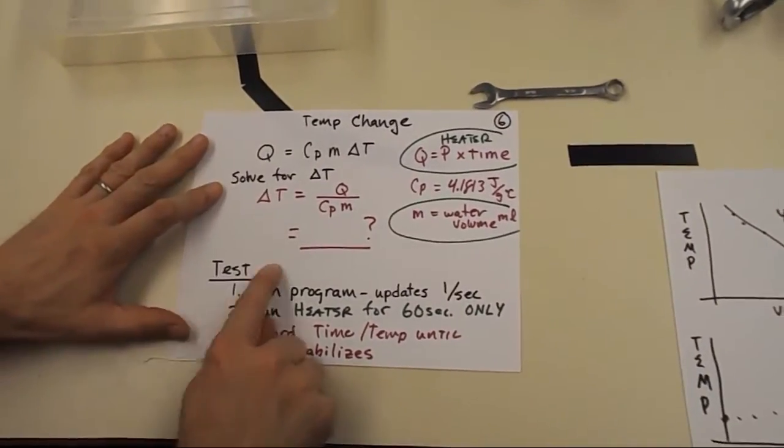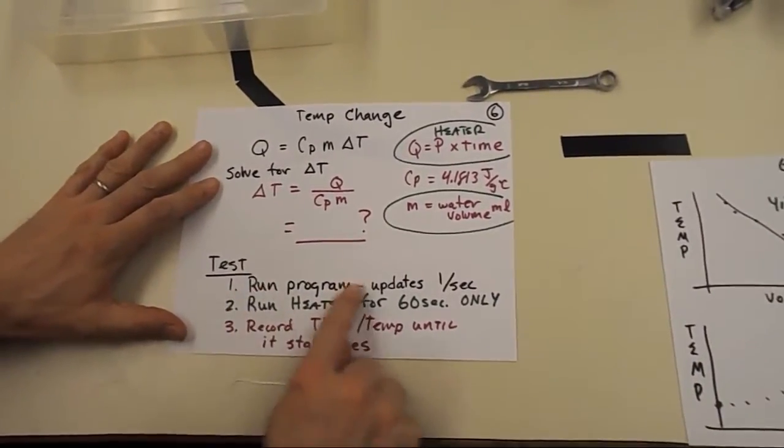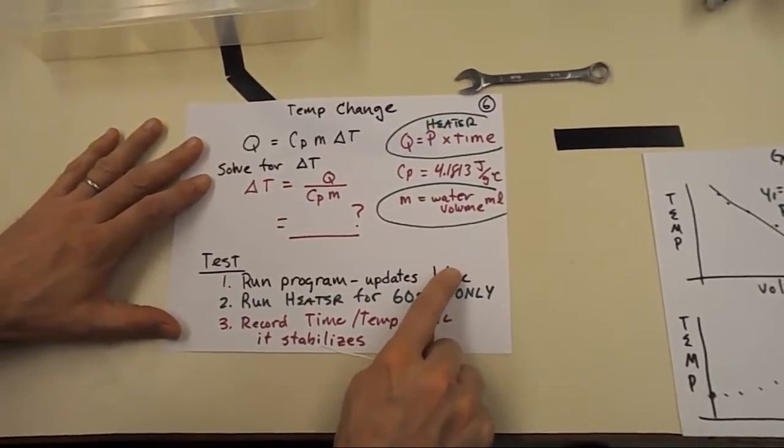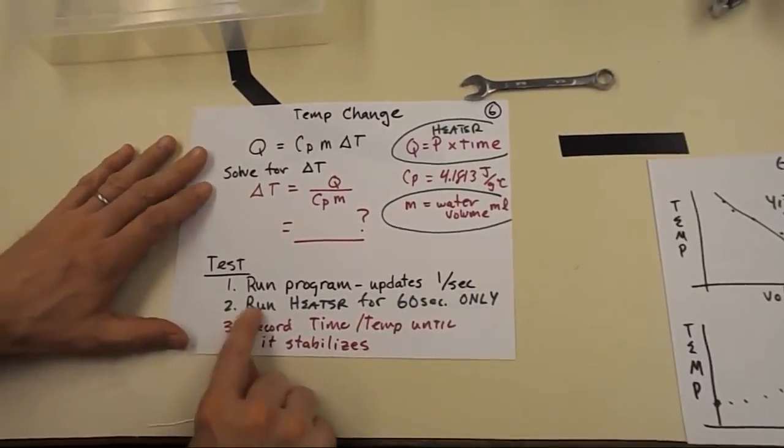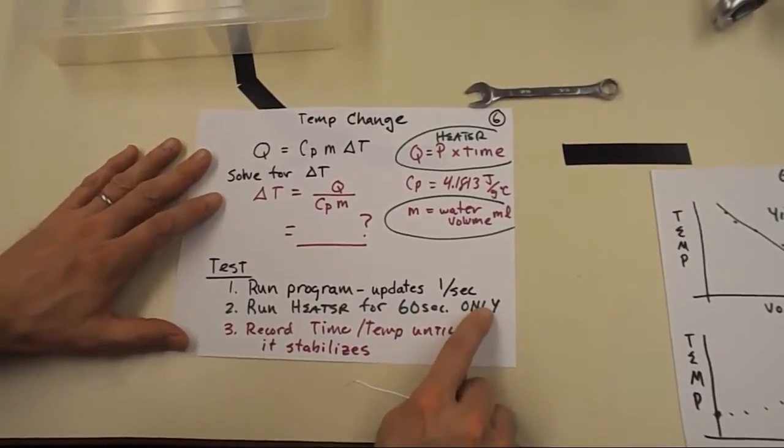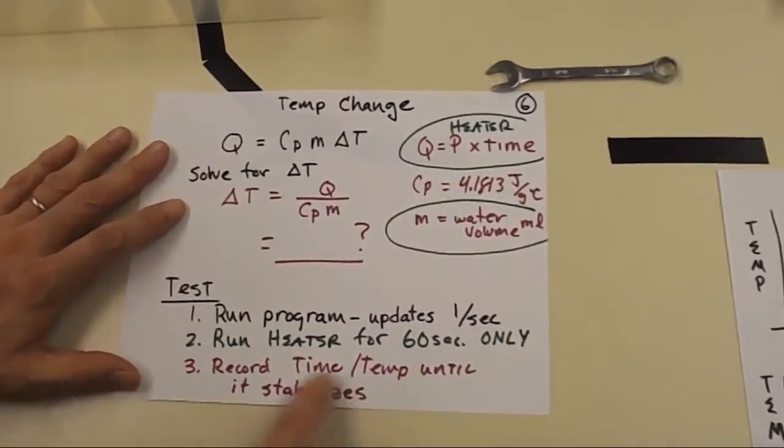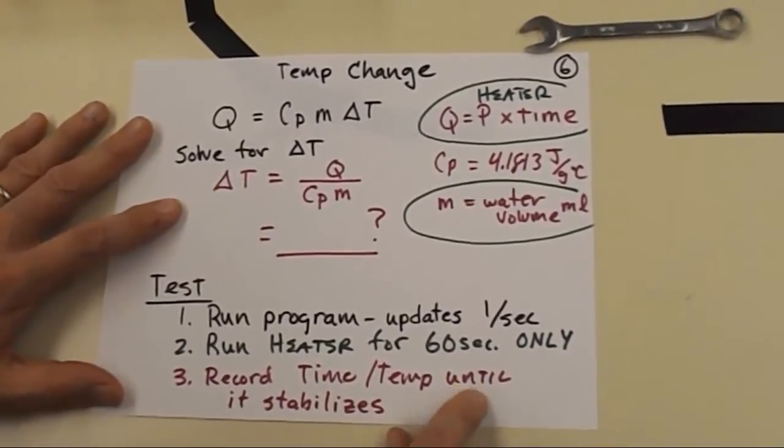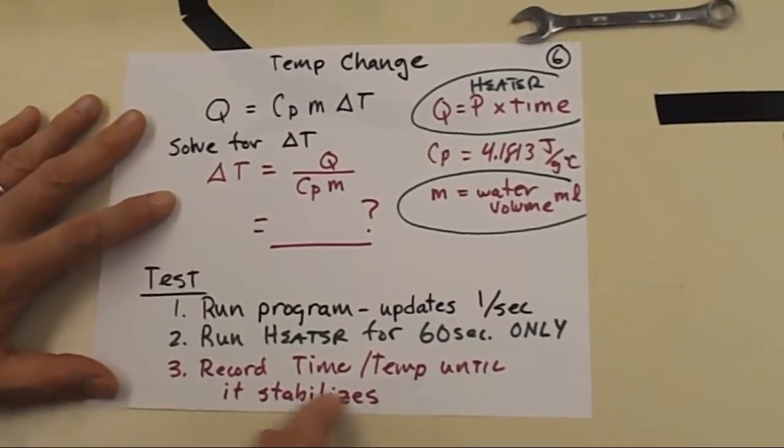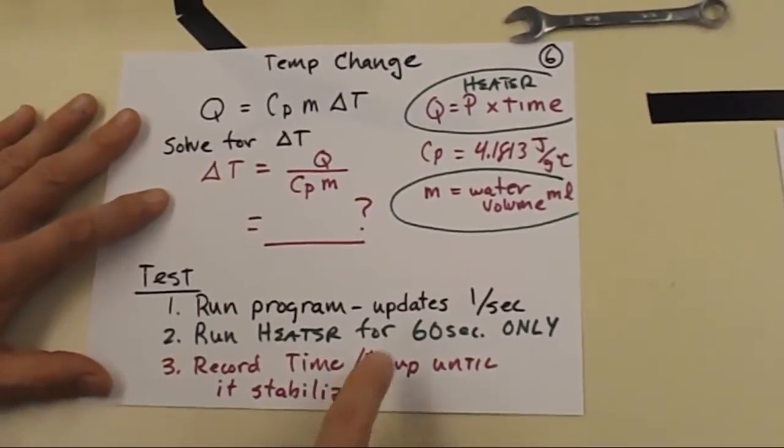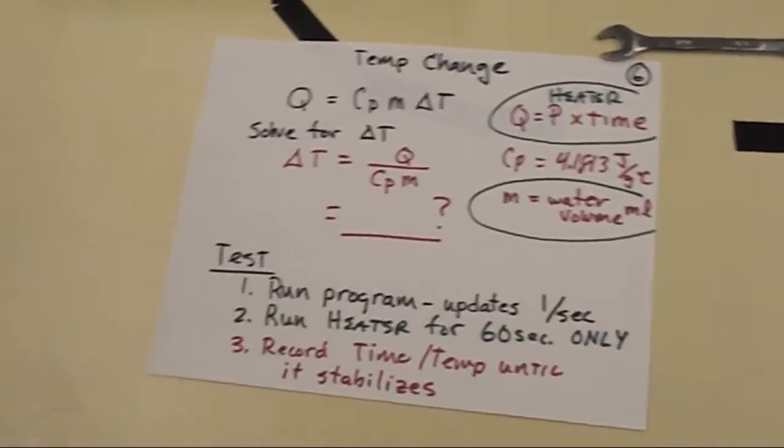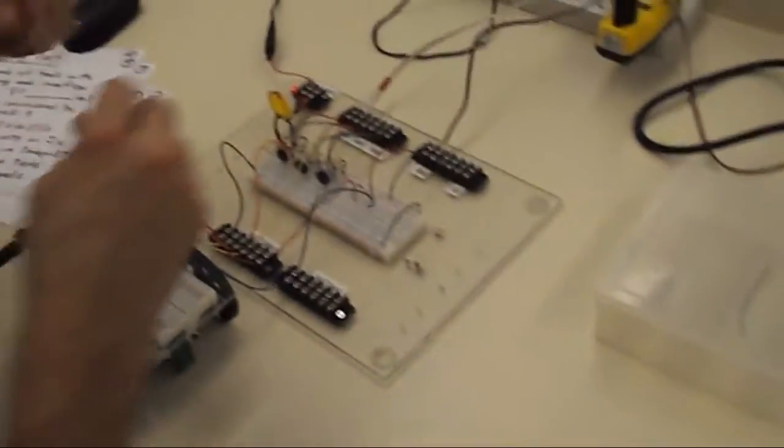Alright. So the next step is go ahead and complete the test. So we're going to make sure the program is still running and updating about once a second so we can collect the temperature data. We're going to run the heater for 60 seconds only and then shut it off. And then we're going to record the time and temperature throughout the whole experiment. It should take about two minutes. That should be more than enough to see it stabilize. But let's talk about how we're going to run the heater rather than using the UNO32. Let's bypass the UNO32 for just this time around.